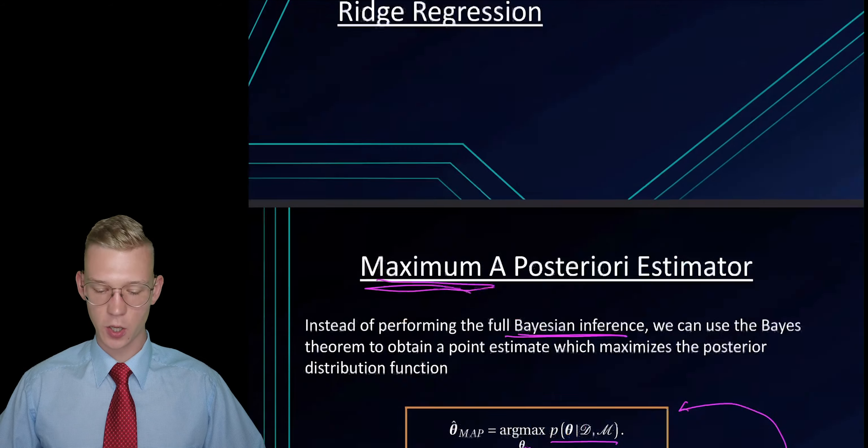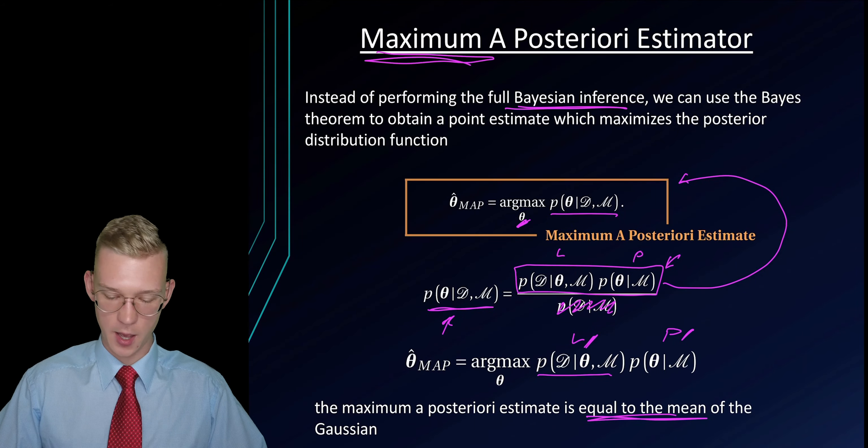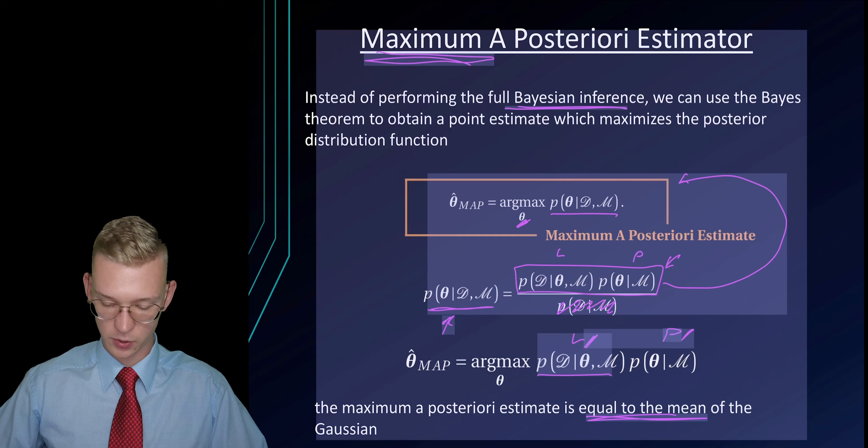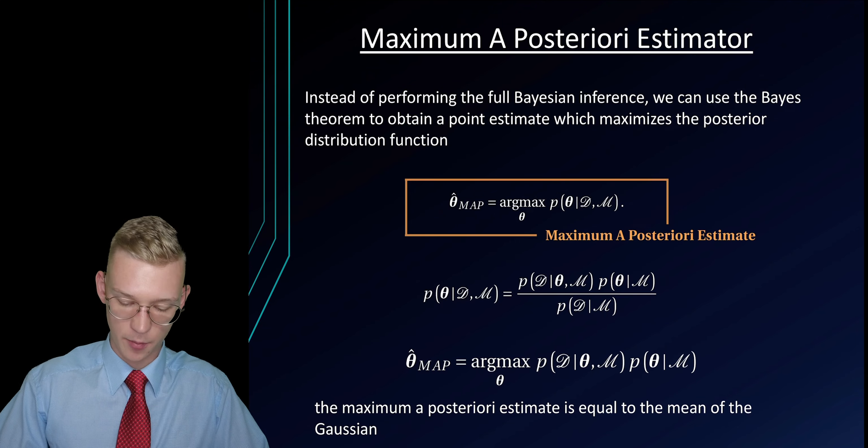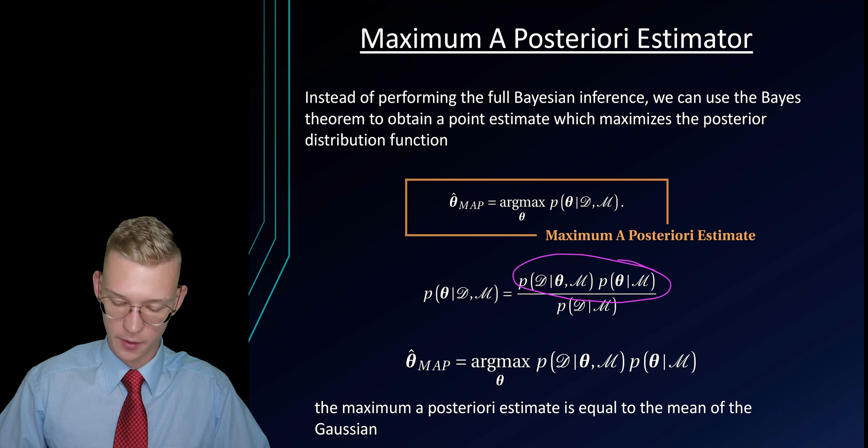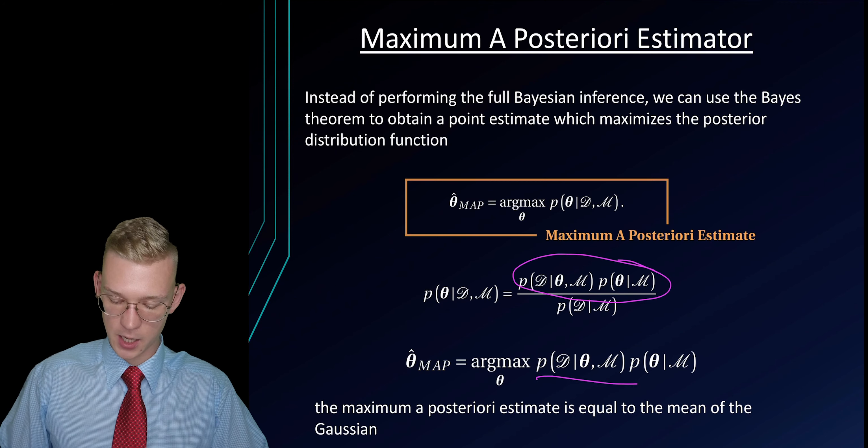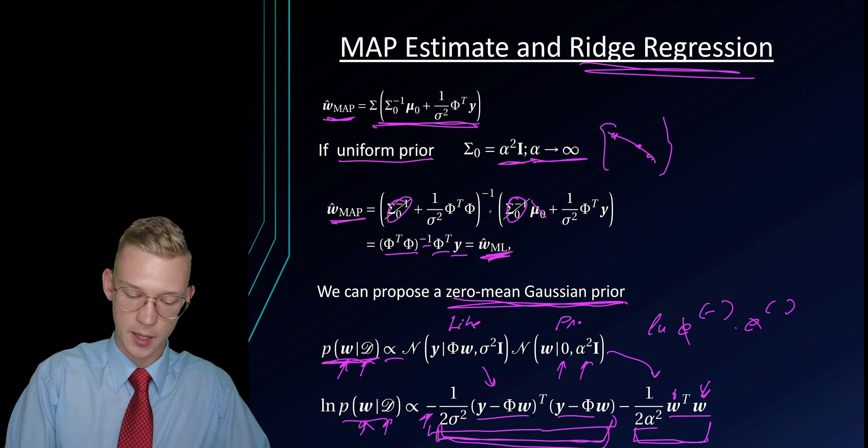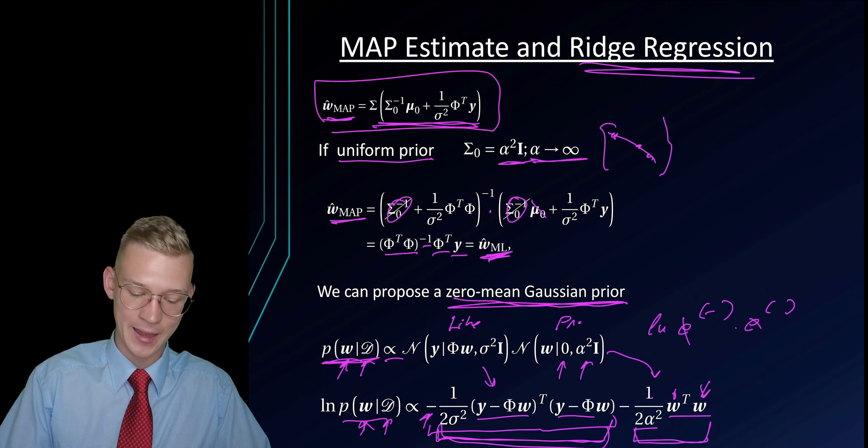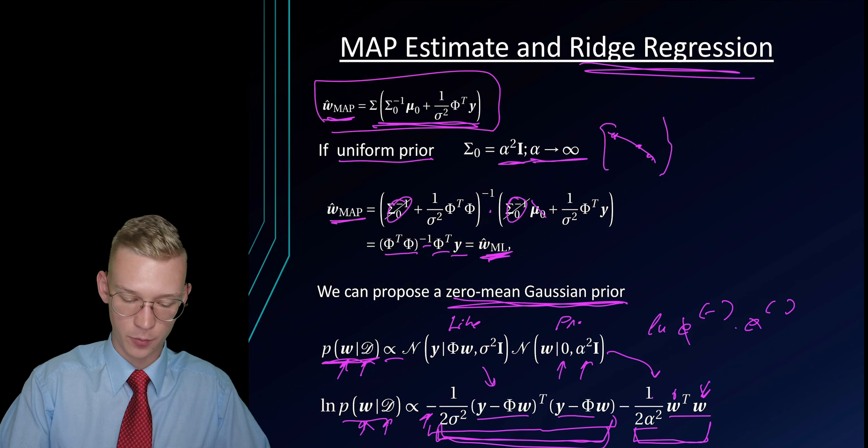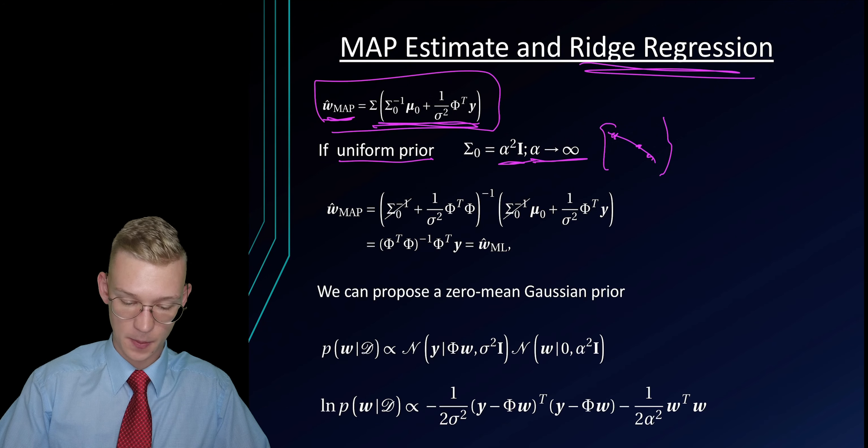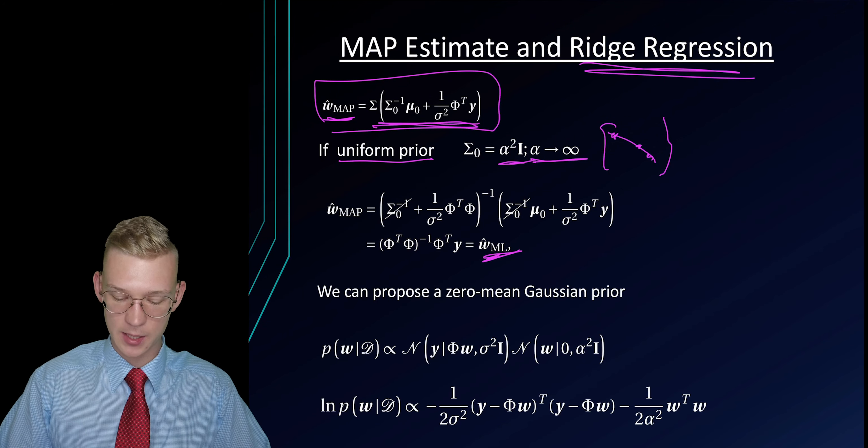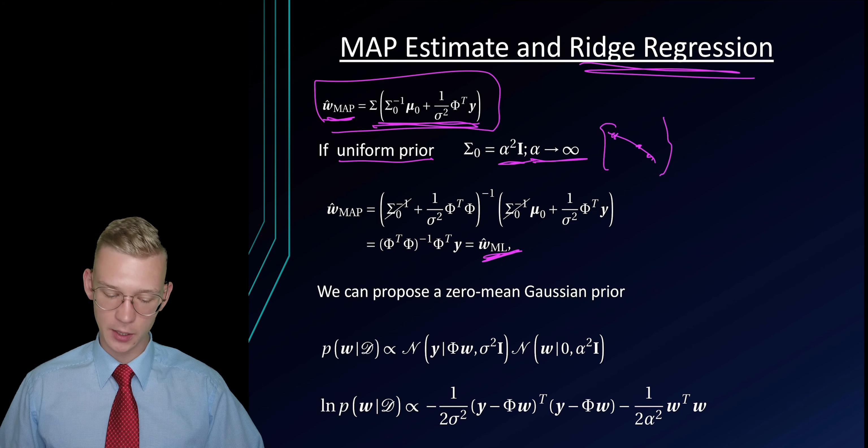Let's summarize. We proposed a maximum a posteriori approach where we just care about the maximum of this term. This is actually the maximum of these two values multiplied. We said that this will be maximum at the mean. If we propose a uniform prior, we will get the same values as our maximum likelihood approach.